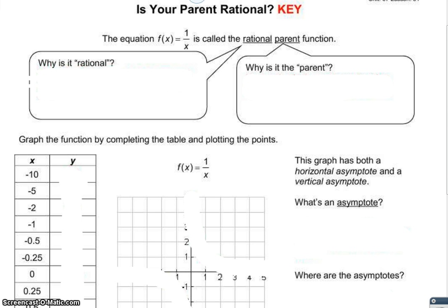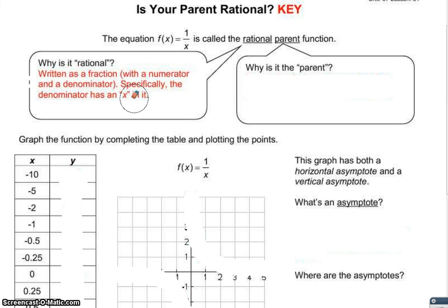Why is it called rational? It's called rational because it's written as a fraction with a numerator and a denominator. Specifically, the denominator has an x in it.